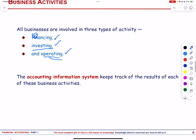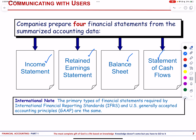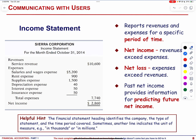Next, let us see how businesses communicate with users. Financial statements serve as a crucial tool for conveying essential information about a company's financial well-being. The financial statements are the income statement, retained earnings statement, balance sheet and statement of cash flows. The purpose of the income statement is to report the success or failure of operations over a period. It lists revenues followed by expenses, resulting in net income or net loss. It helps investors and creditors analyze net income for predicting future performance.